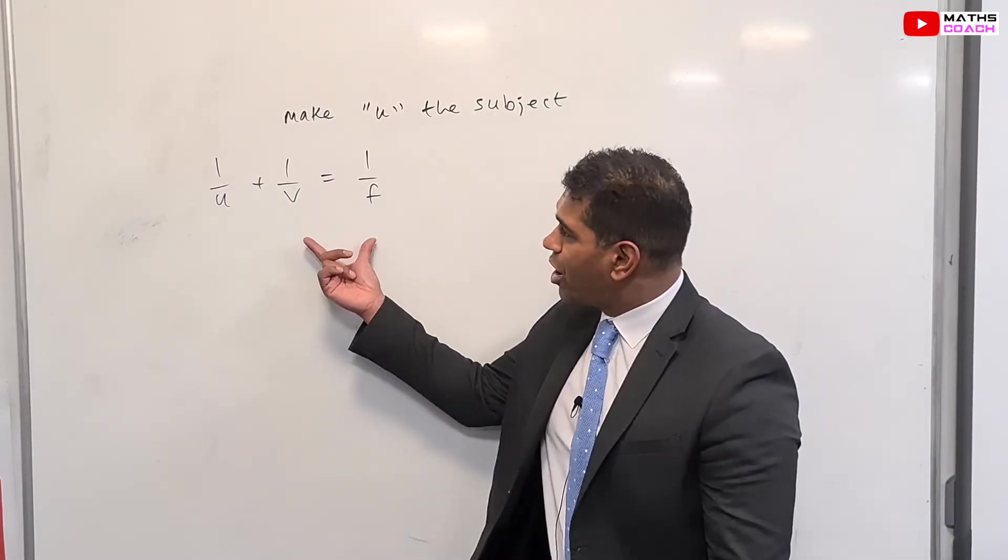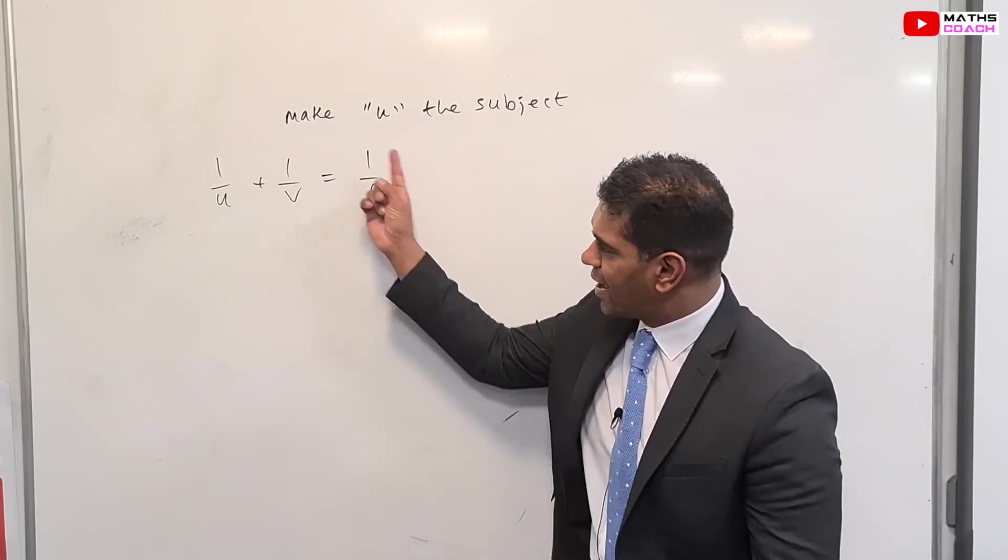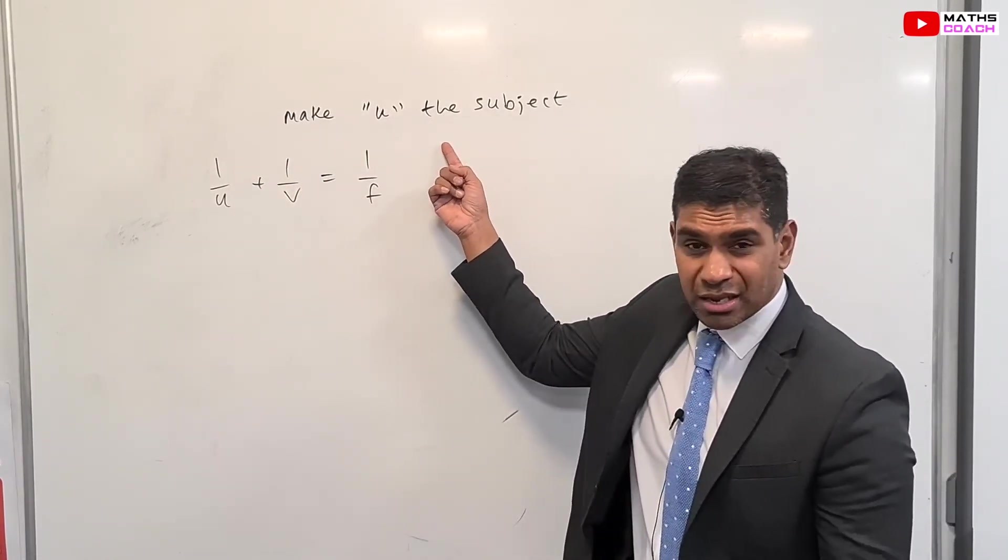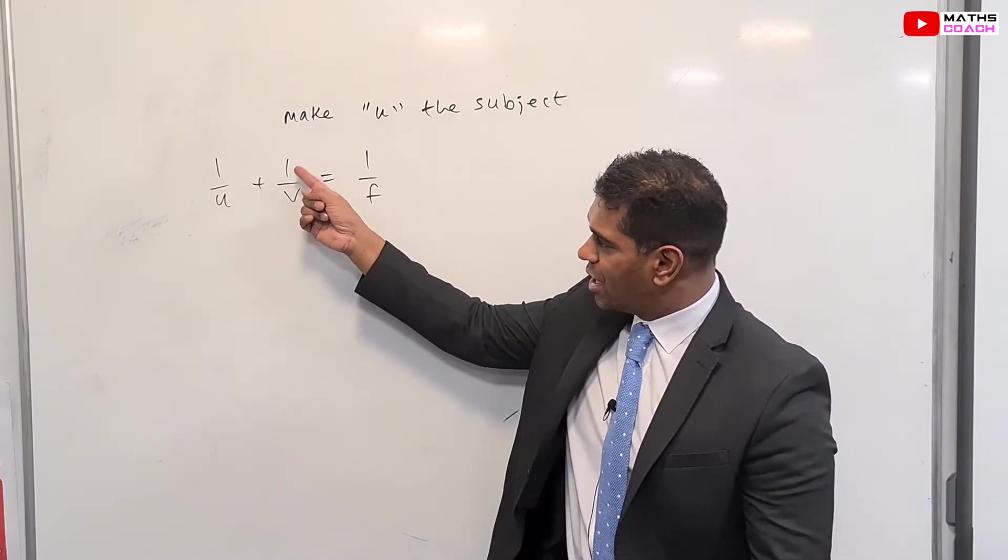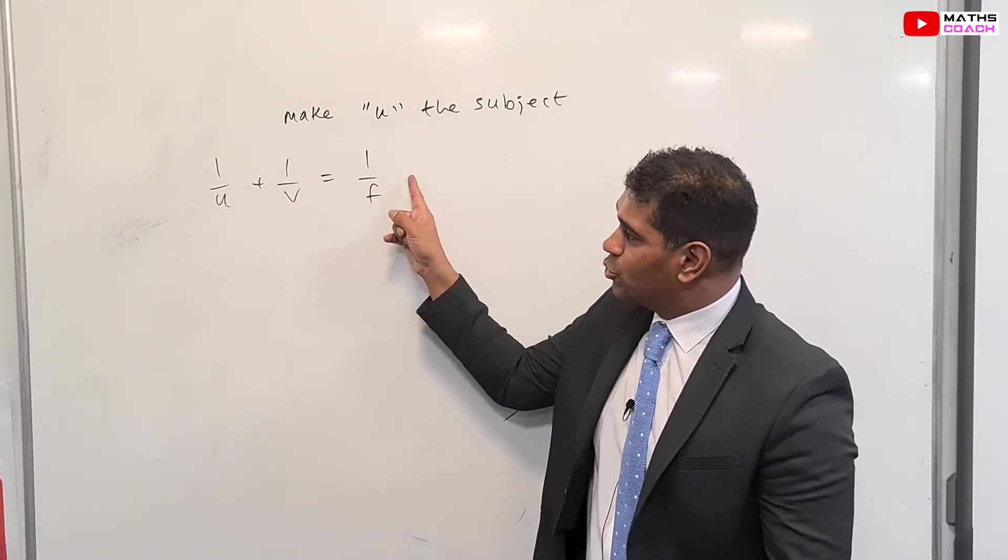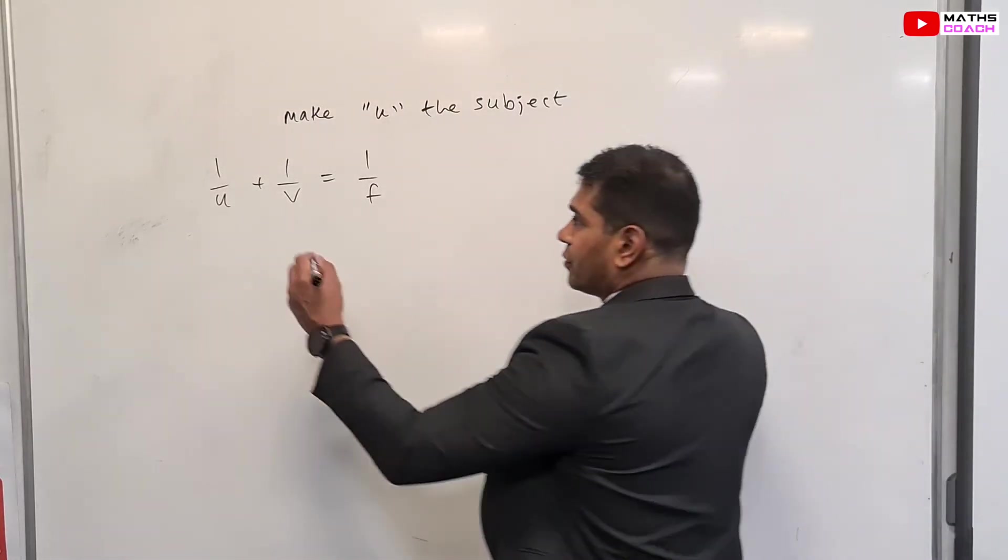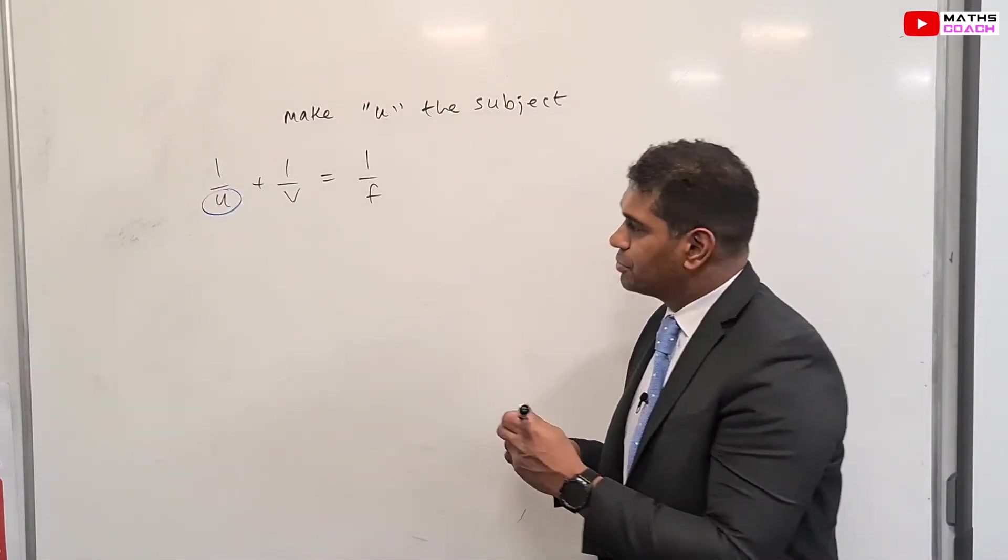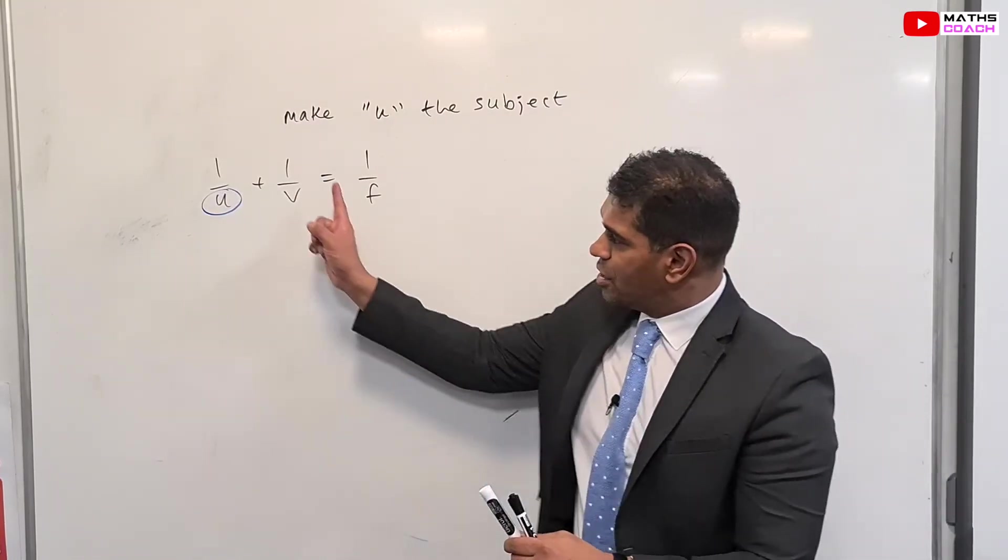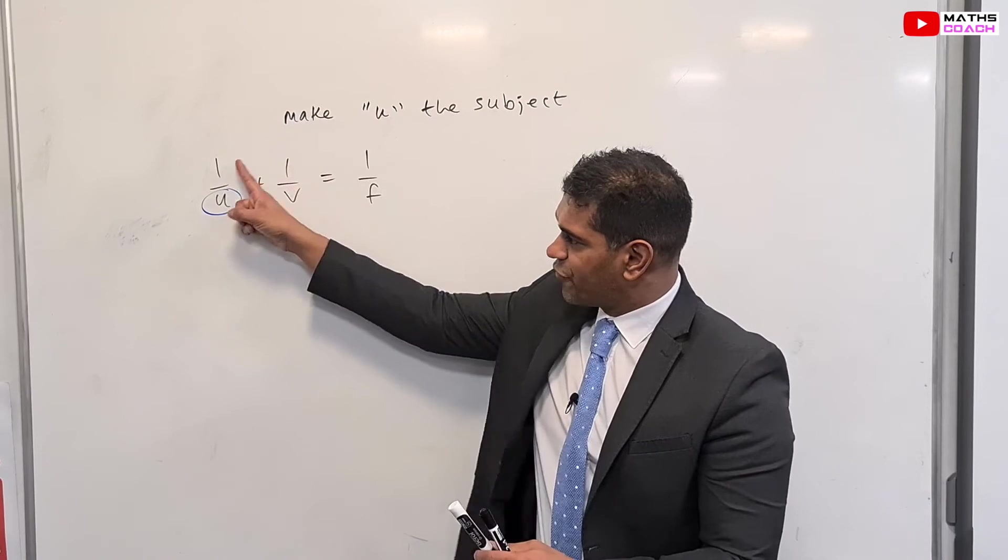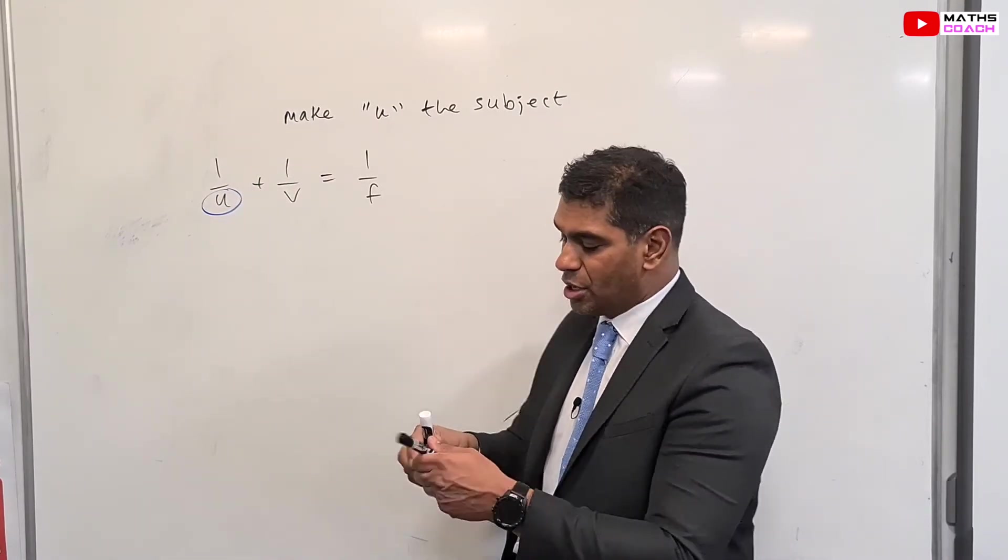On to our next question on making a subject. You can see here, by looking at the question, we have to make U the subject, but this is a far more complicated question. We have a fraction, or reciprocal here, equals another fraction. And the idea here is to make our U the subject. The question we have to ask is, what do I do first? So looking at this addition, this fraction, we need to mix that up and make it into one algebraic fraction.